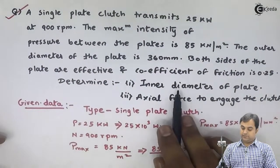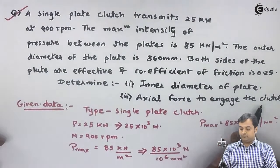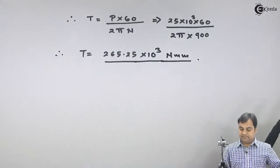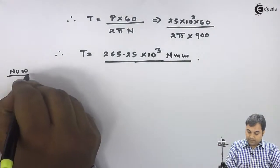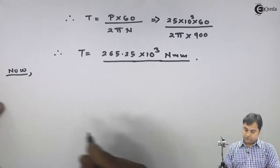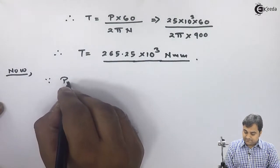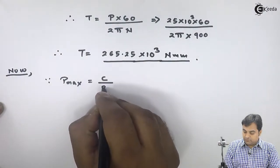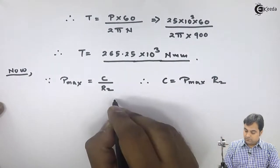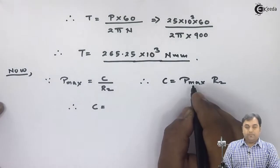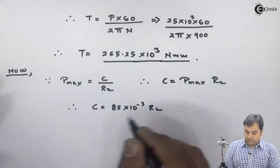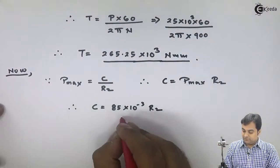First I will find the inner diameter. Since maximum pressure is given and we know that maximum pressure occurs at minimum radius, I say that P max equals C upon R2, therefore C equals P max into R2. P max is 85 into 10 raise to minus 3, into R2. So here I have C in terms of R2.